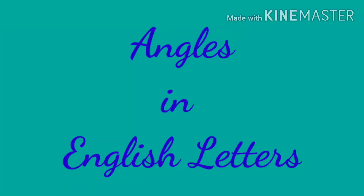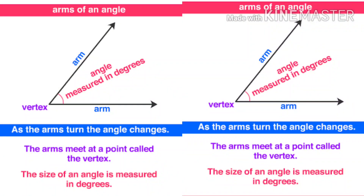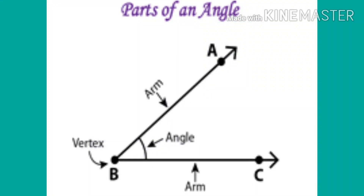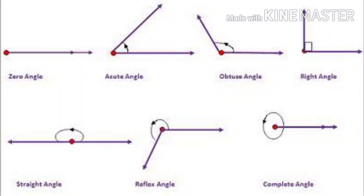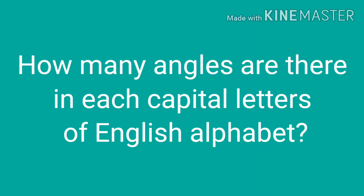First of all, you must know that an angle is the combination of two arms on a fixed point — there is no angle without arms. In this video we will know how many angles are there in each capital letter of the English alphabet. We will look at only acute angles, right angles, and obtuse angles in each letter.